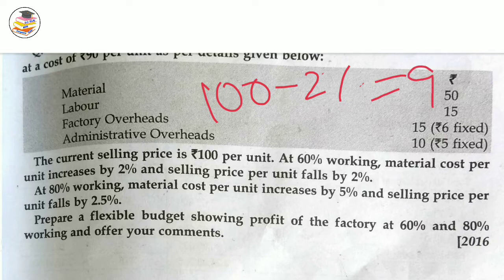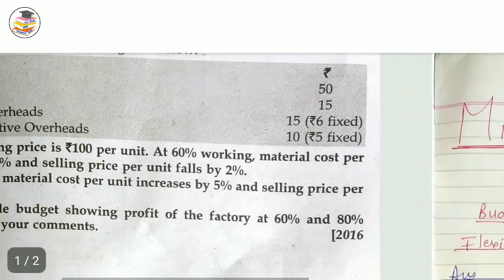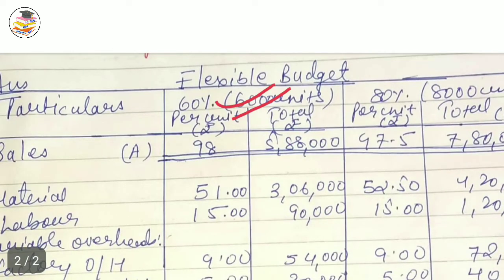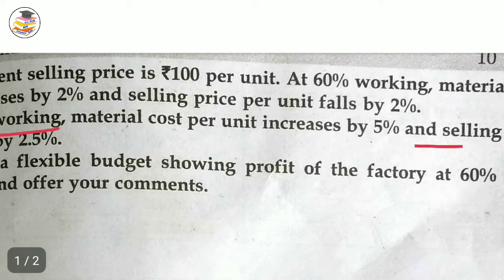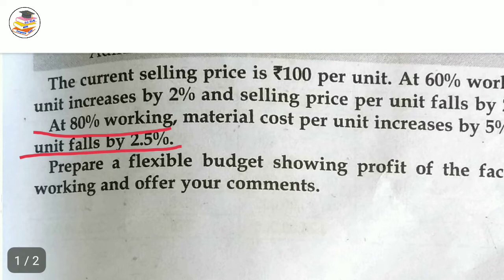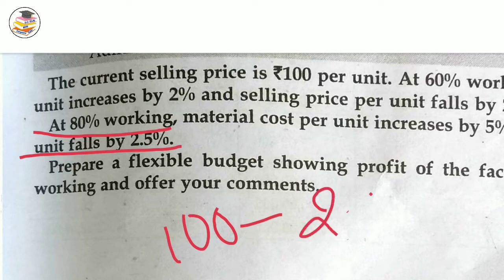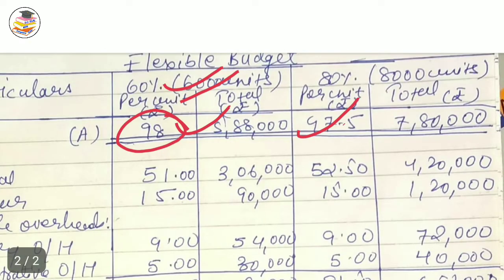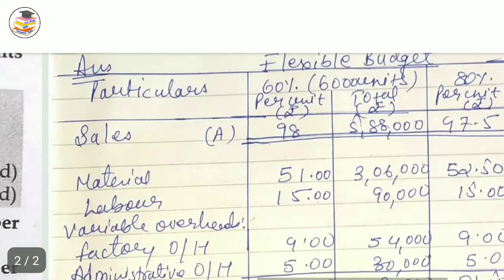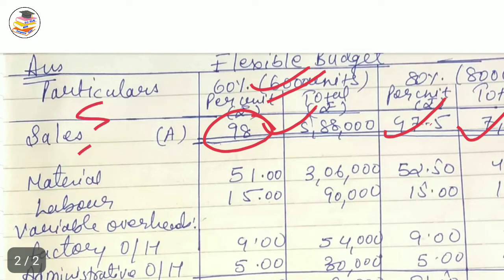Clear. Now let's move forward. First our format: sale minus variable cost gives contribution, contribution minus fixed cost gives profit. Now we work on variable cost. Material is variable cost, labor is variable cost, but factory overhead is not fully variable. Administrative overhead — so first we write material.